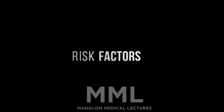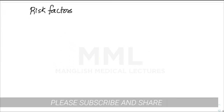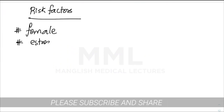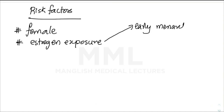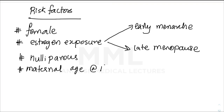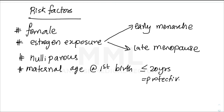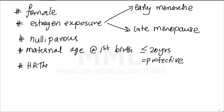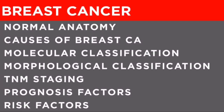Risk factors for breast cancer include: being female (99% of cases), estrogen exposure — early menarche, late menopause — meaning more estrogen means more cancer risk. Regarding parity, maternal age at first birth less than 20 is protective. Hormone replacement therapy is also a risk factor.